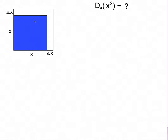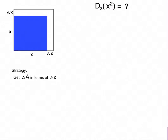So what's our strategy? We're trying to figure out the instantaneous rate of change of the area compared to the side. So we do three things, three steps. First of all, we try to figure out the actual change itself, not the rate of change, but the change in area in terms of delta x.